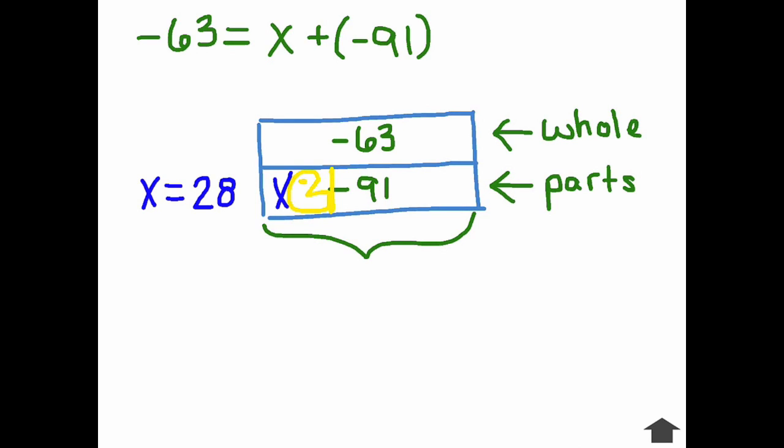Let's look at the algorithm to compare. Negative 63 equals x plus negative 91. First thing we need to do here is use our additive inverse to remove that negative 91 and keep our equation balanced. Because this is an addition problem, and we are adding negative 91.